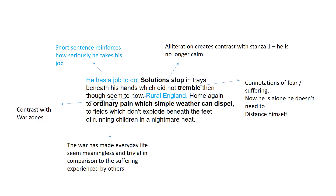Moving on to the second stanza: 'He has a job to do. Solutions slopping trays beneath his hands which did not tremble then though seem to now. Rural England, home again, to ordinary pain which simple weather can dispel, to fields which don't explode beneath the feet of running children in a nightmare heat.' The short sentence 'He has a job to do' really reinforces how seriously he takes his work.